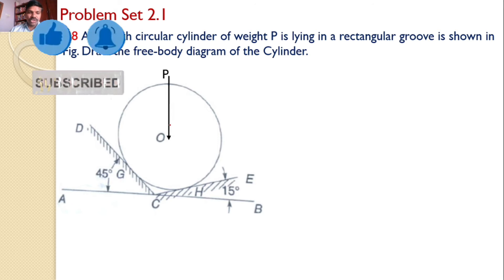The first force is P, the self-weight acting from point O. Since the cylinder is supported at point G, this support will introduce a reaction force perpendicular to DC and towards the cylinder. This is the reaction at G.